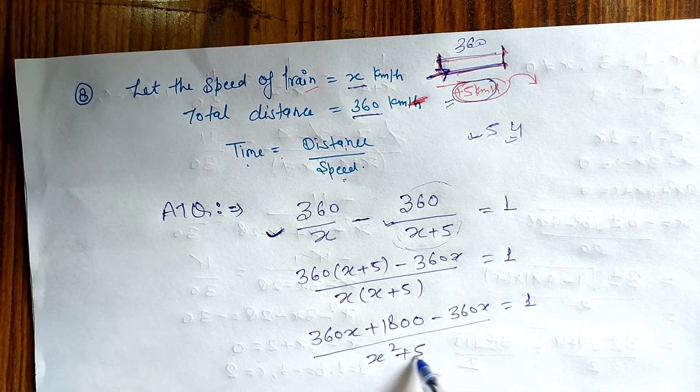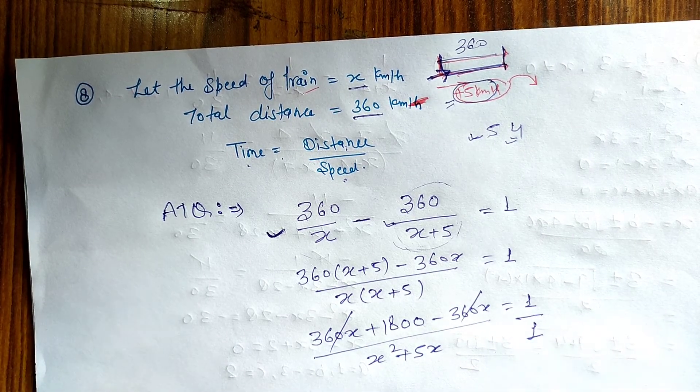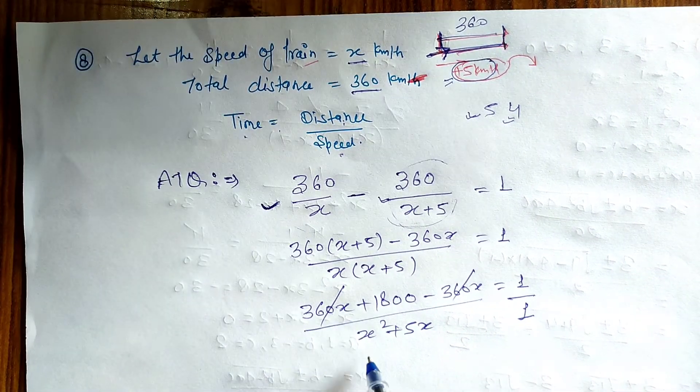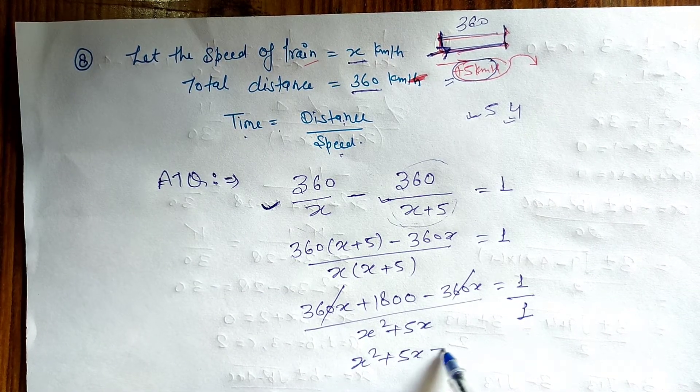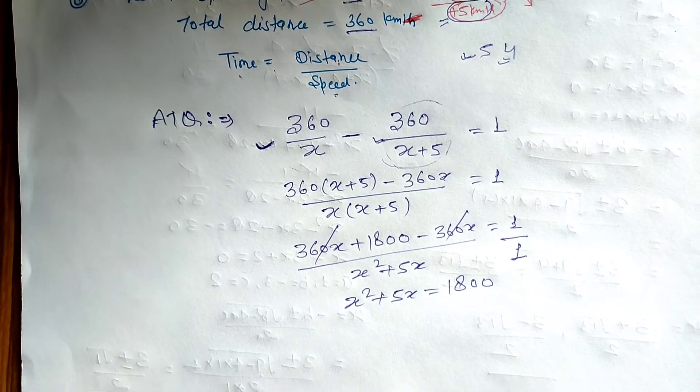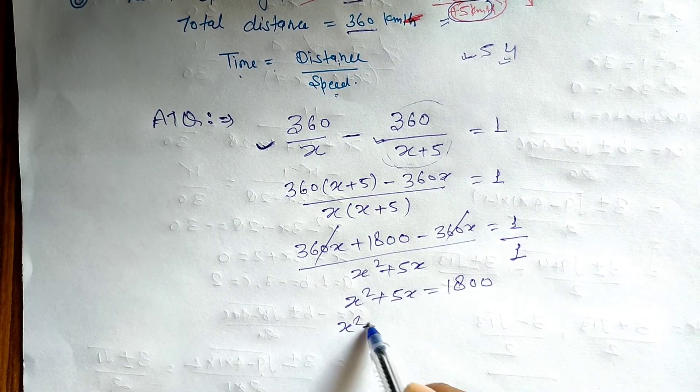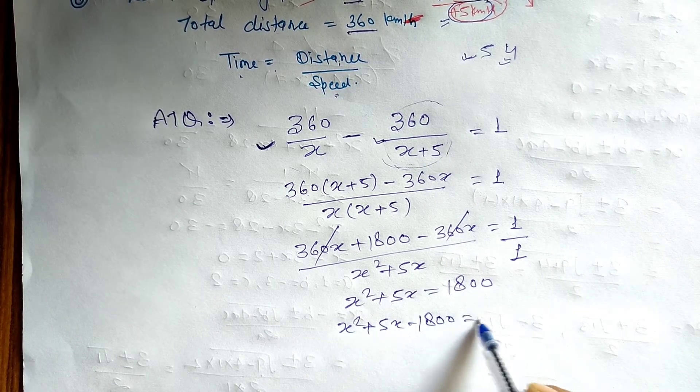These are cancel out. Now we have to cross multiply. So kya ho jaega mera: x square plus 5x equal to 1800. And now x square plus 5x minus 1800.